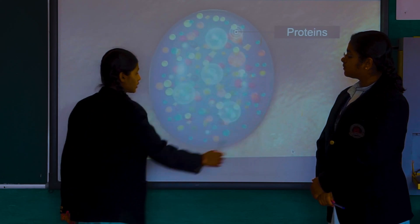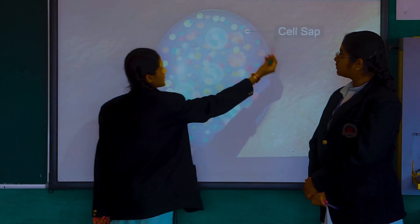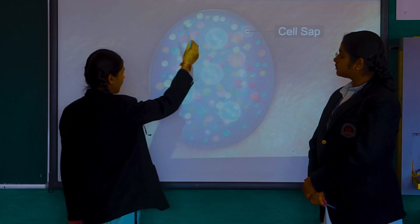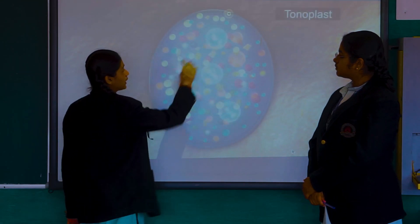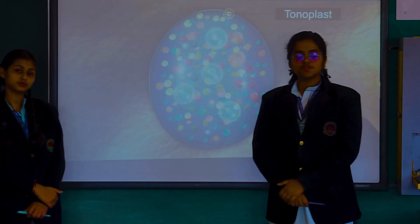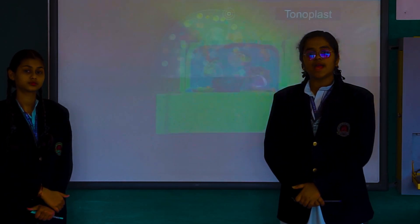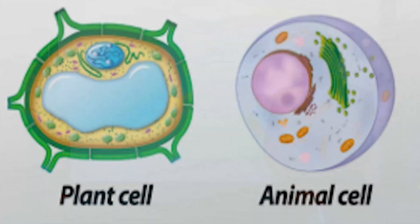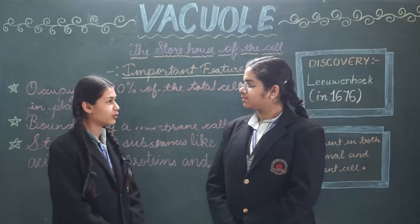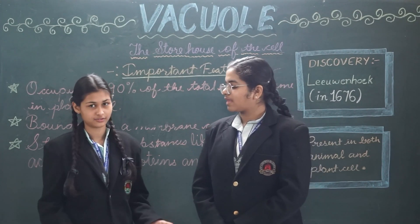It also stores sugars and proteins. It is a powerful structure. This is the simple structure of a plant vacuole. But in animal cells, the vacuoles are not as big as a plant vacuole. Studying with the smart home is really fun.